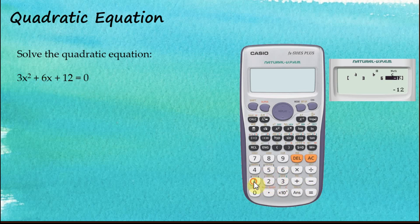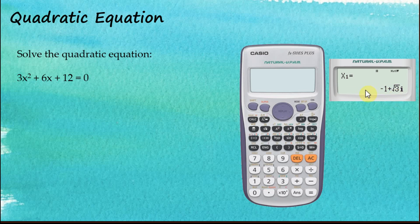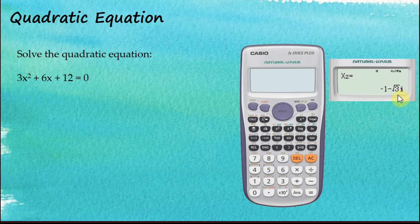Enter c equals 12, then tap equal one more time. This time, x1 equals negative 1 plus square root of 3 times i — that little i stands for imaginary numbers, meaning the solution is a complex number and the root is not real. Tap SD to see the decimal form. The second solution is negative 1 minus square root of 3i, also a complex number. Tap SD again for the decimal representation.